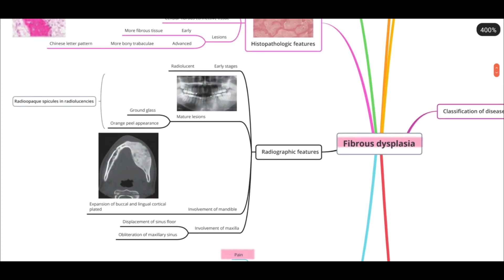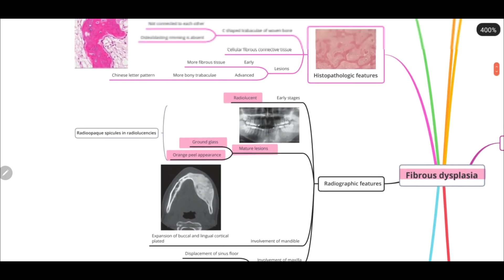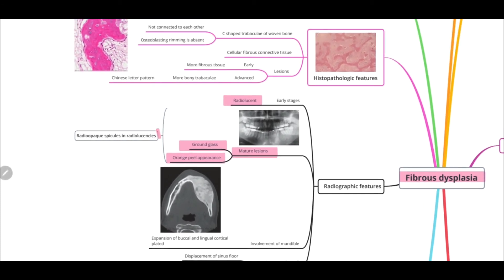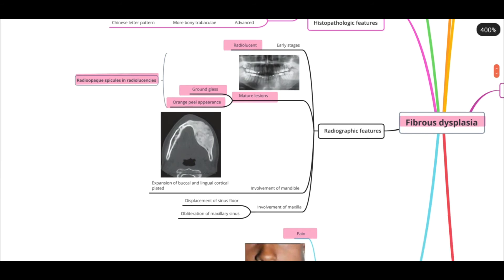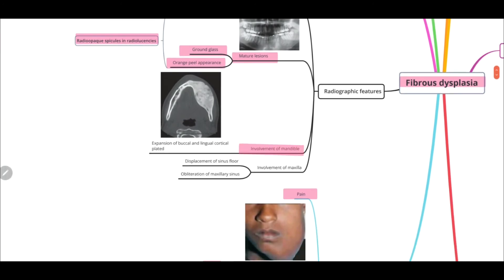Coming to the radiographic features: in the early stage, you would see a radiolucent lesion. In the mature lesion, you would see a ground glass appearance and an orange peel appearance — you are seeing radiopaque spicules in radiolucency, which is a mixed radiopaque-radiolucent lesion. If it involves the mandible, you would see expansion of the buccal and lingual cortical plates. If there is involvement of the maxilla, there could be displacement of the sinus floor and obliteration of the maxillary sinus. The ground glass and orange peel appearance are important to remember.